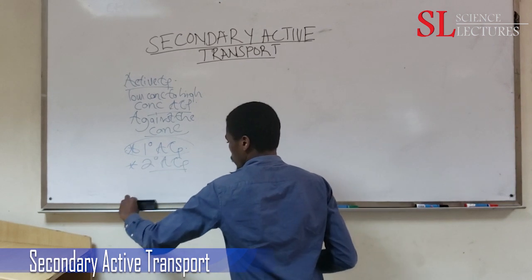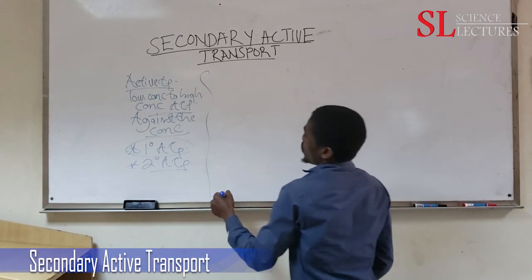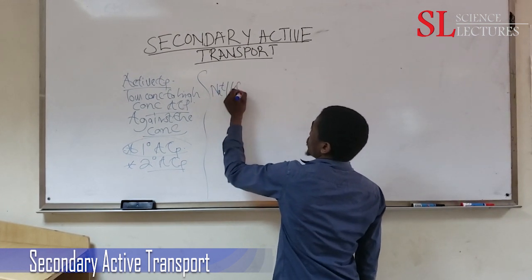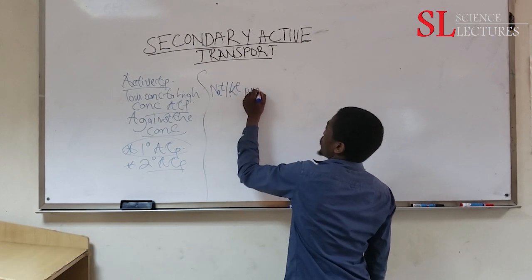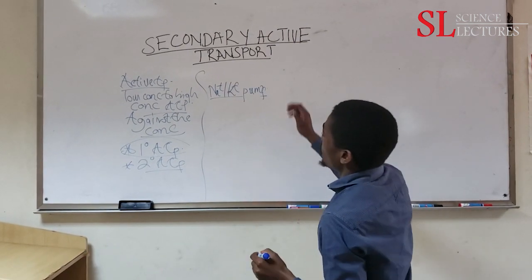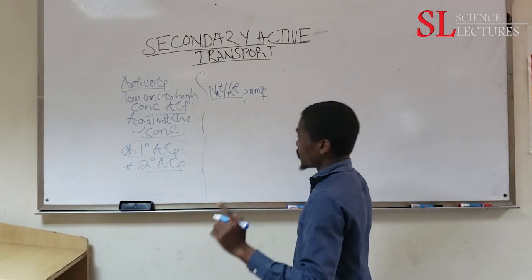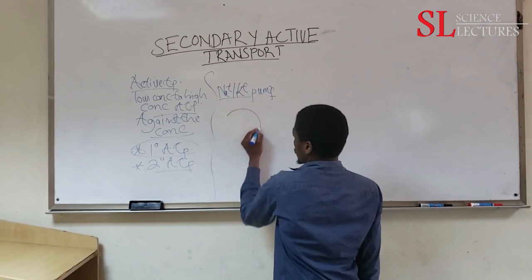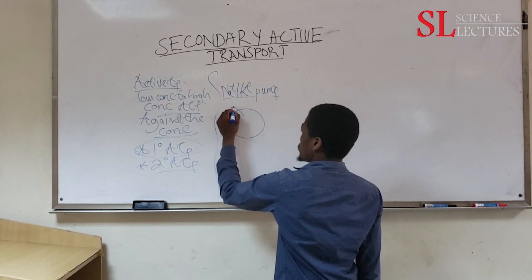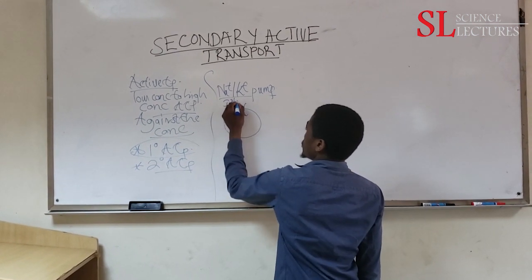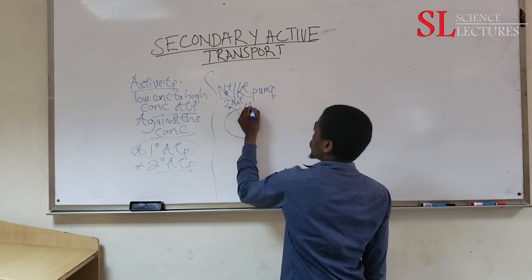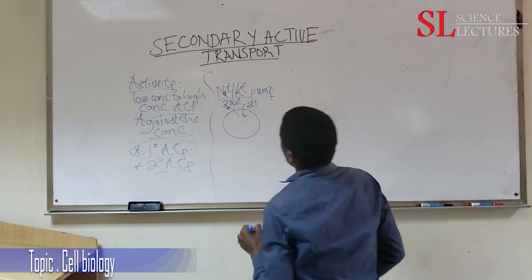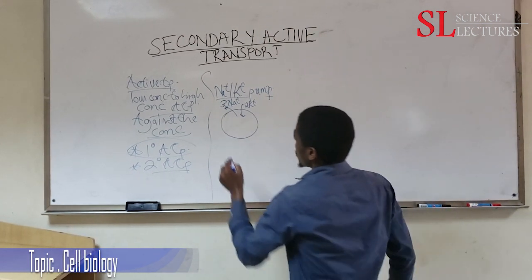Before we start with secondary active transport, we need to understand the concept of the sodium-potassium pump, also called the ATPase pump. This pump uses energy in the form of ATP directly, and it ensures that three sodium ions are pumped out for every two potassium ions that are pumped in.